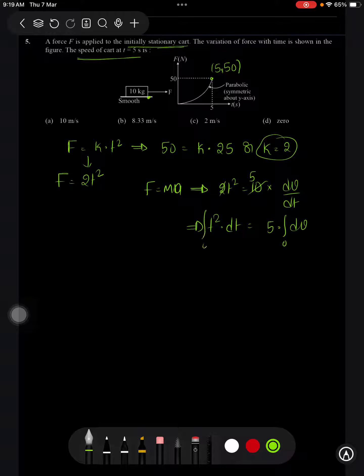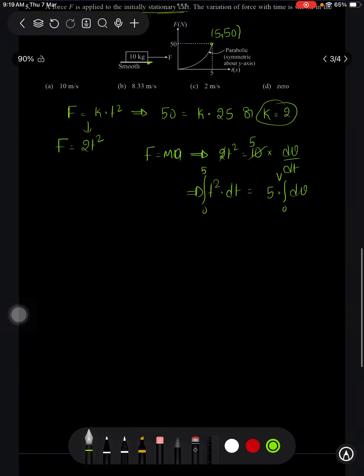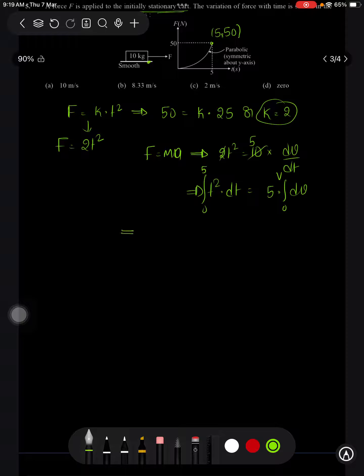Integrating it on both sides. Initially we are starting from rest. After 5 seconds we have to calculate what is the speed. So this will be t cubed by 3. On substituting the limit it will become 5 cubed by 3 which equals 5 into v. So we will cancel out here 25 by 3. So v value is going to be equal to approximately 8.33 meter per second.